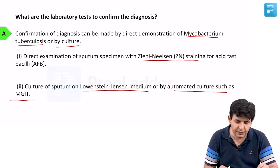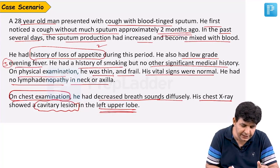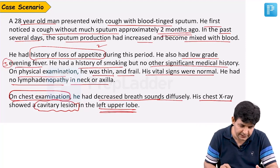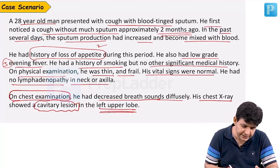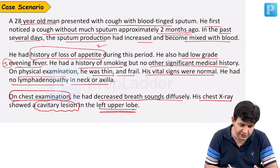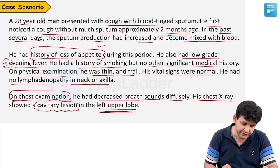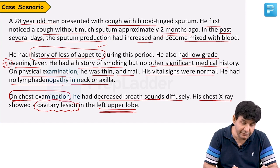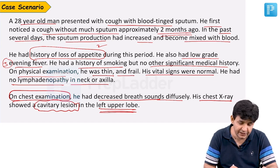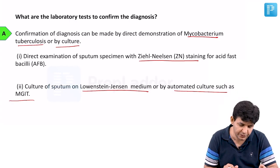Focus on these key hints: loss of appetite, cough with blood-tinged sputum, decreased breath sounds on chest examination, cavitary lesion in the left upper lobe on chest X-ray, and evening rise of fever. All of these go in favor of tuberculosis.